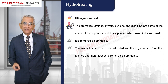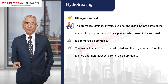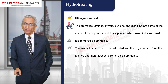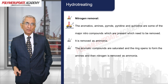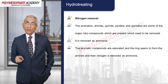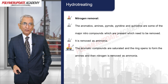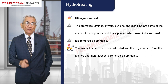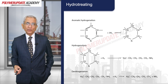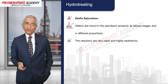For nitrogen removal, aromatic amines, pyrrole, pyridine, and quinoline are major nitrogen compounds present in the feed or generated in the process. Nitrogen is removed as ammonia — the aromatic compounds are saturated, the ring opens to form amines, and then nitrogen is removed as ammonia.